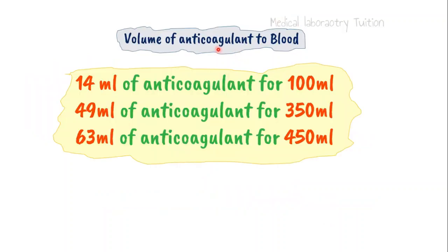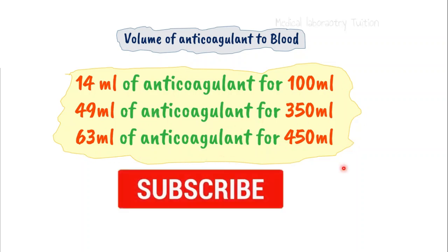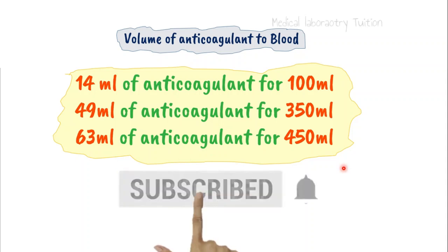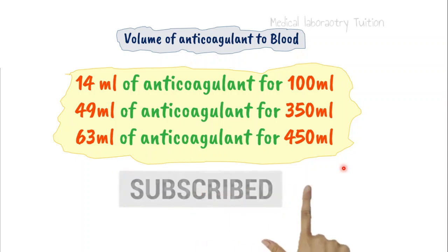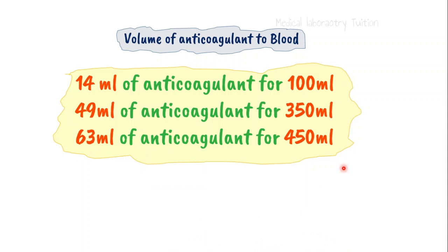Finally, how much volume of anticoagulant do we take for how much blood? For 100 ml of blood we take 14 ml of anticoagulant. For 350 ml of blood we take 49 ml of anticoagulant. For 450 ml of blood we take 63 ml of anticoagulant. A question for you: what is the difference between CPD-A1 and CPD-A2? Thank you.